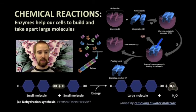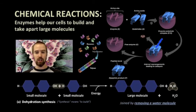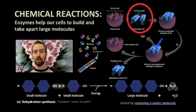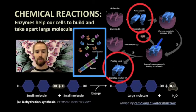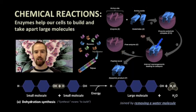Enzymes help to catalyze these kinds of reactions. Here we see a depiction of a dehydration synthesis reaction. In this case, two amino acids are our substrates. Water is produced — that's the dehydration part — and a polypeptide is synthesized as a product of this reaction. This is how polymerization occurs, and monomers are combined to form a polymer with the assistance of enzymes.